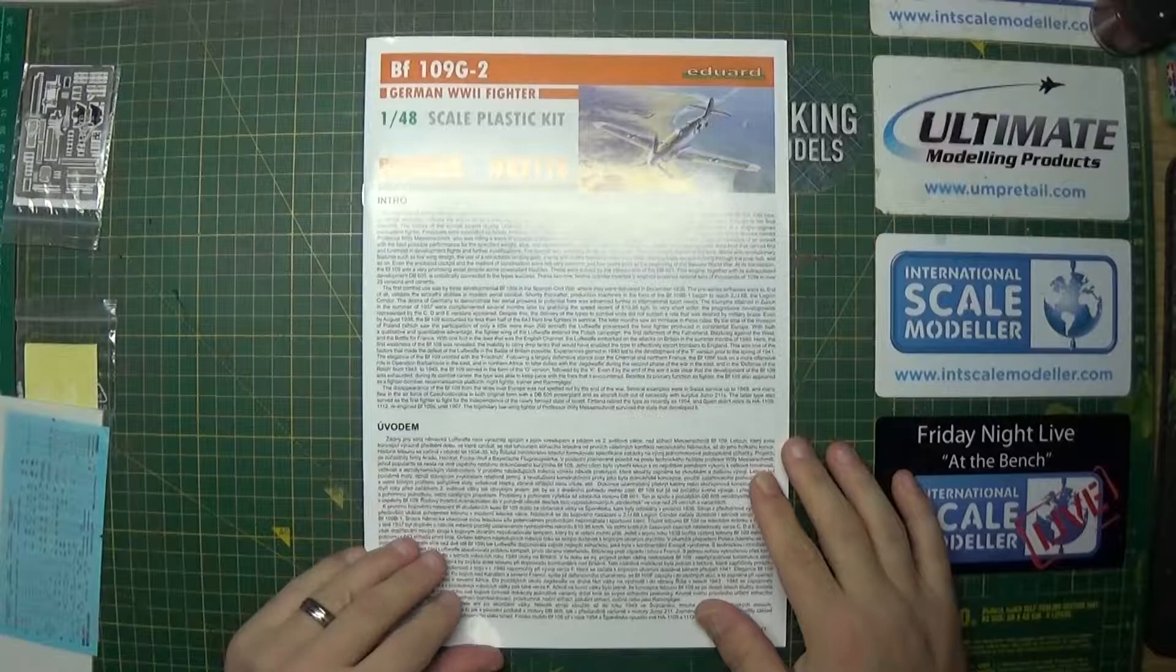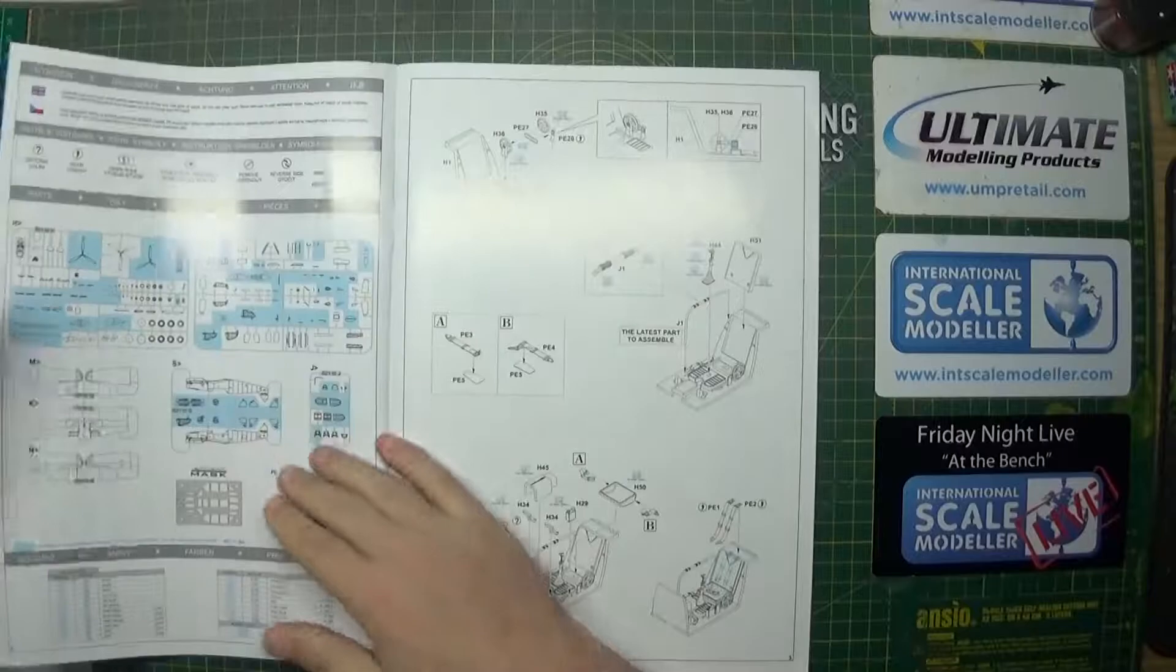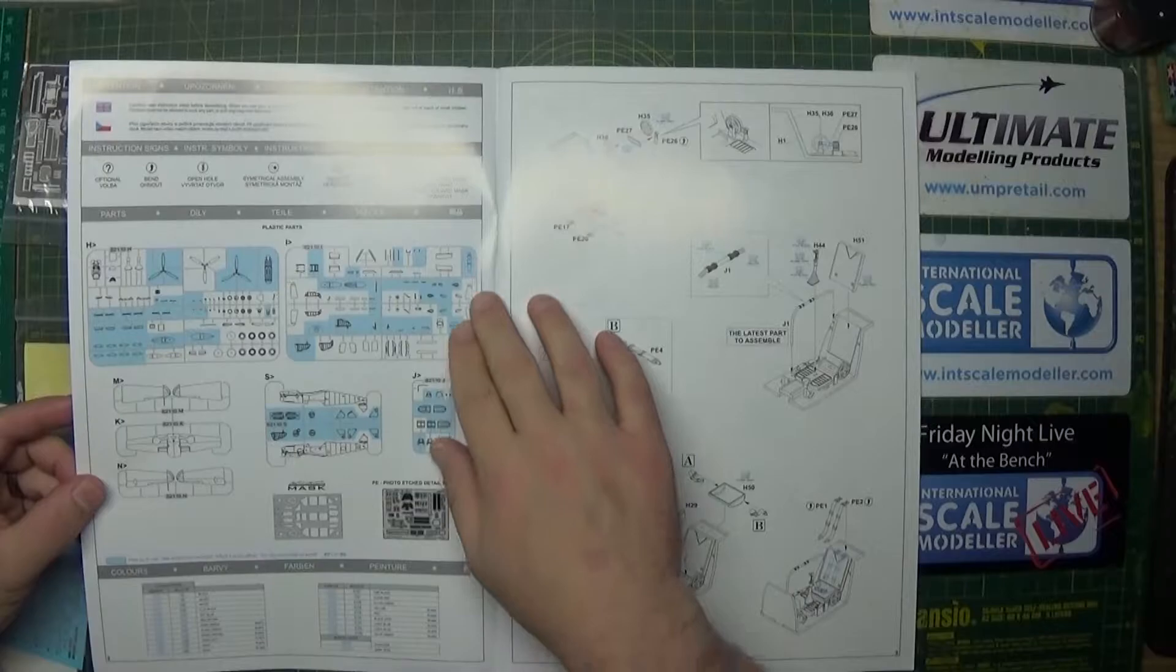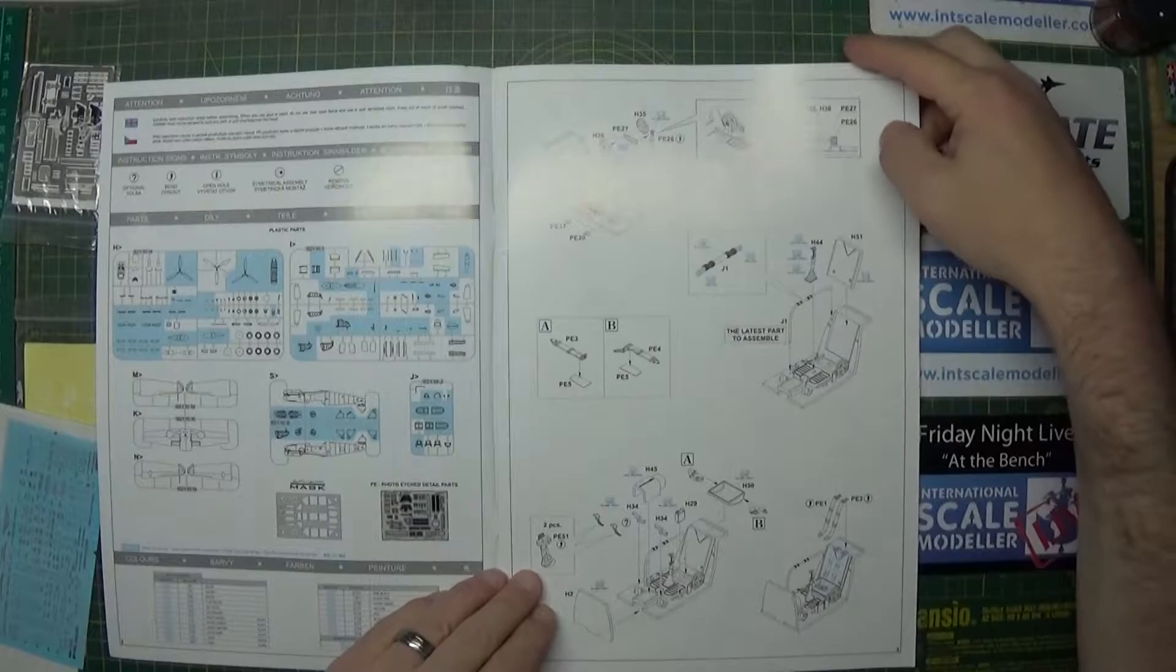We have a nice intro, a little bit of information about the BF 109 G2, and then we're on to sprue layouts. Anything marked in blue is surplus to requirement, so it looks like there's quite a lot on these sprues that are not needed.